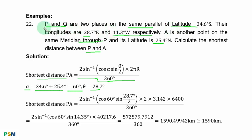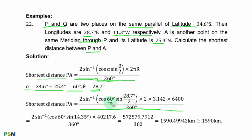A is another point on the same meridian through P, so points P and A have the same longitude: 28.7 degrees. Substituting all parameters into the formula, you have alpha = 60 degrees, theta over 2 = 28.7 over 2, multiplied by 2 times pi times 2 times the radius of the Earth.